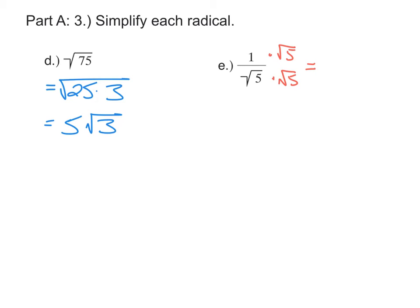When I multiply across the top, I'll get 1 times square root of 5 is square root of 5. But multiplying across the denominator, square root of 5 times square root of 5 is square root of 25, which is 5. Square root of 25 is 5, and now it's not a radical in the denominator anymore.